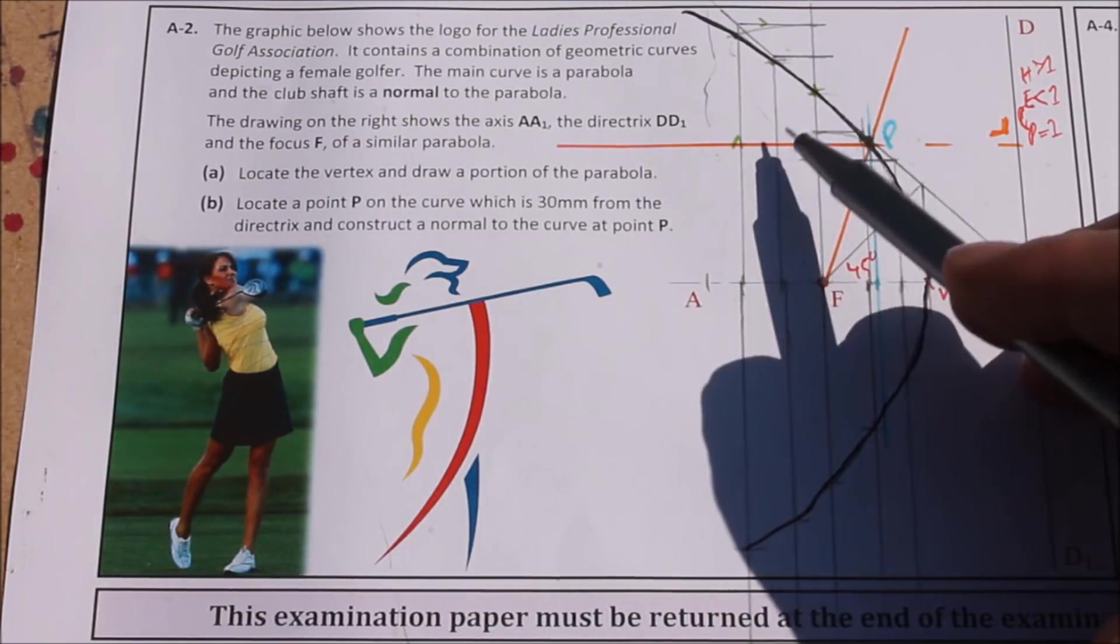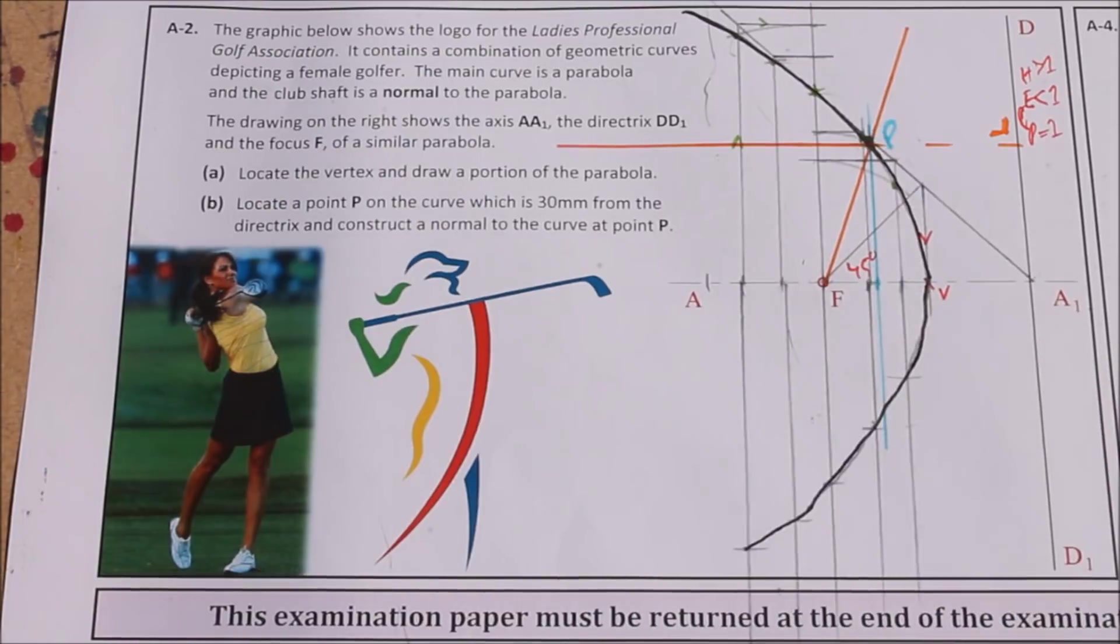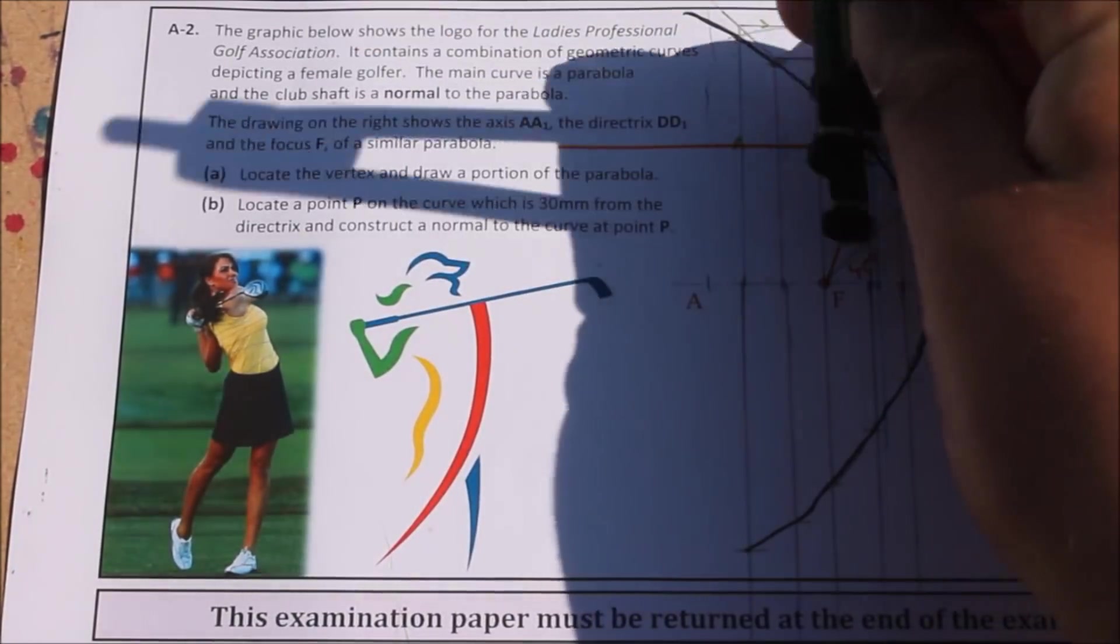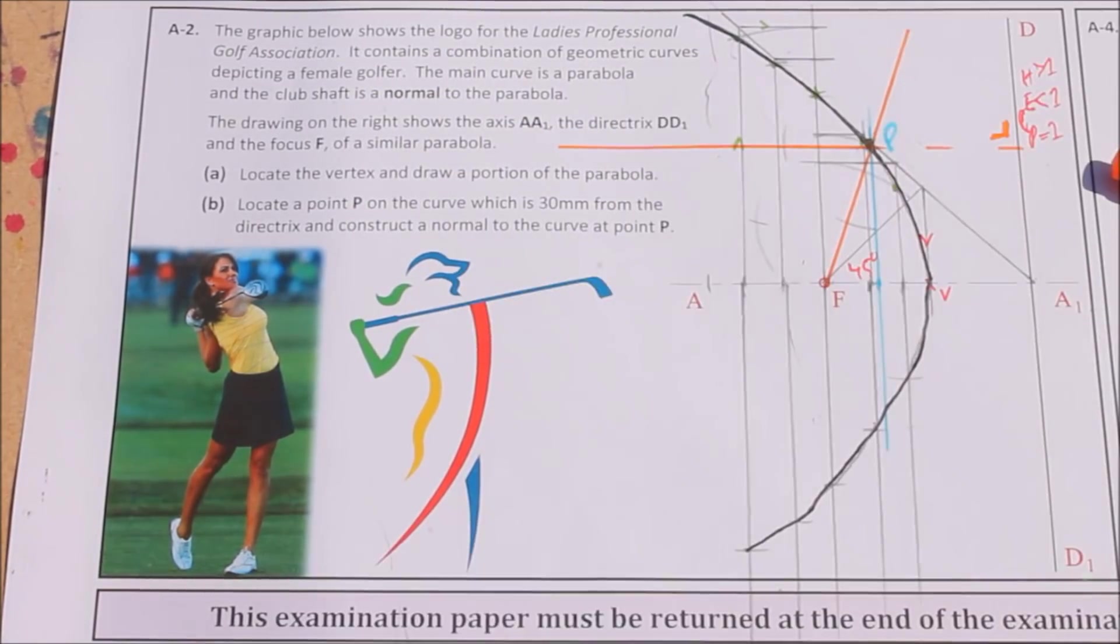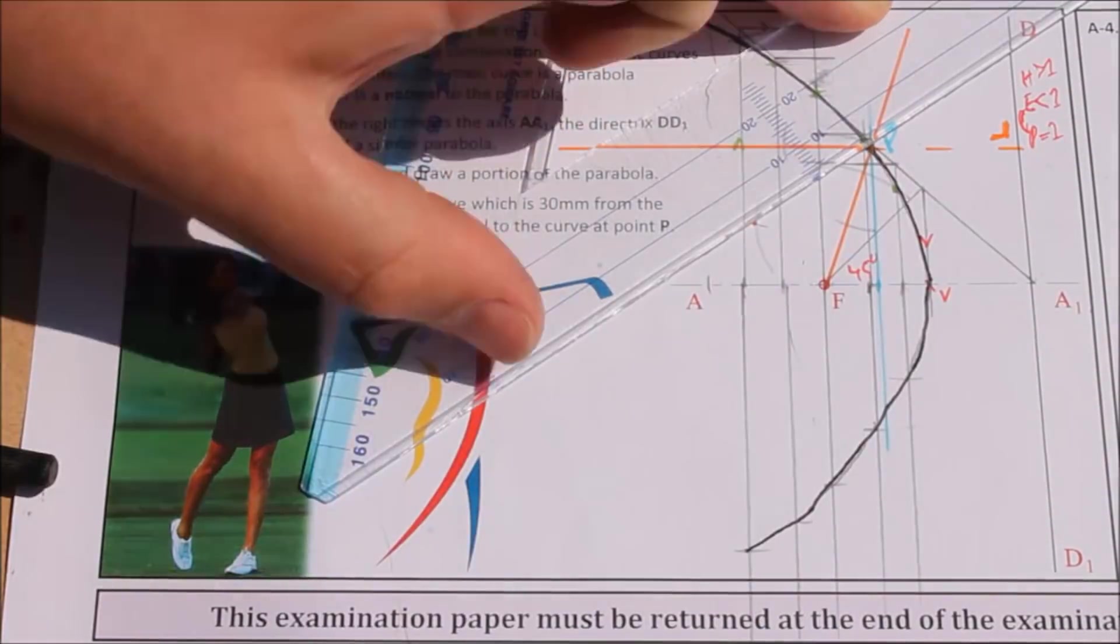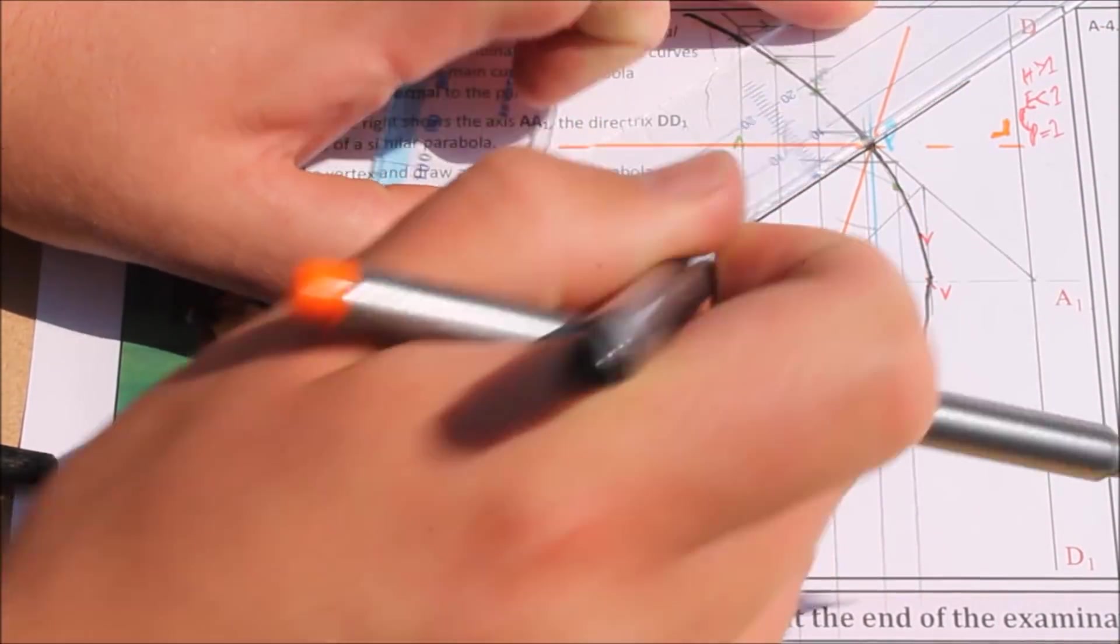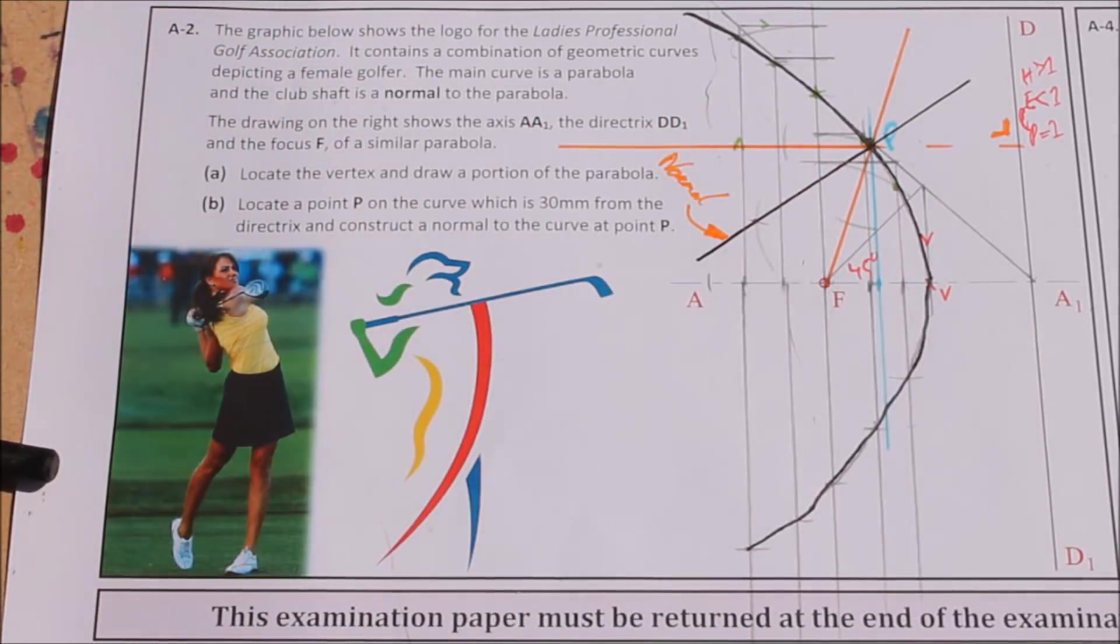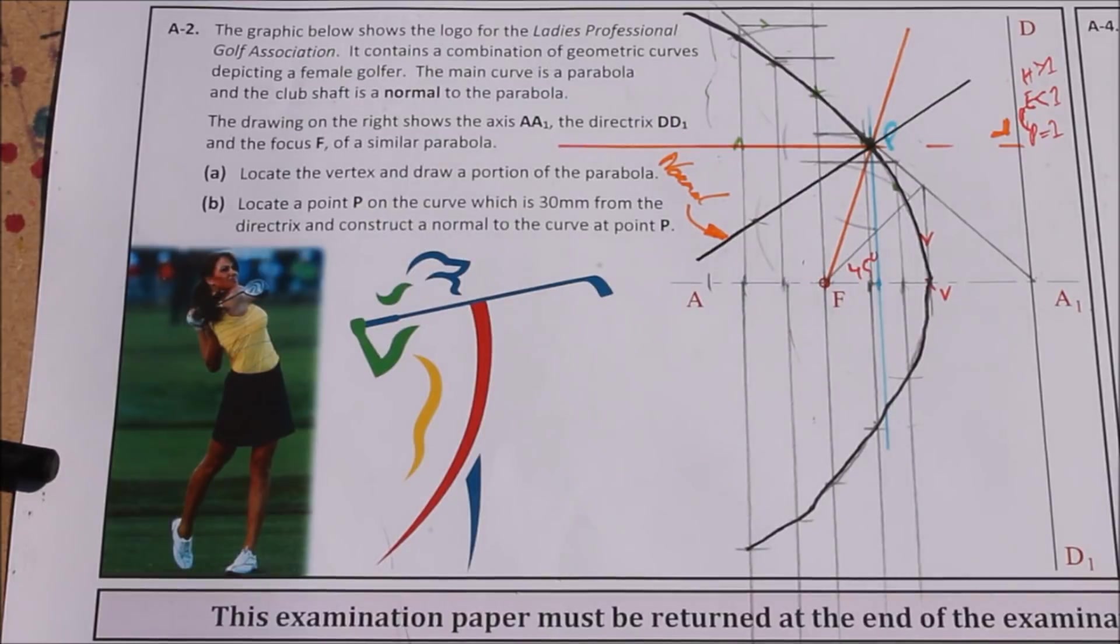So this angle here, bisect that angle and draw in your normal. By bisecting the line and bisecting the angle, you get the normal to the curve and that is part B done. So you get point P 30mm from the directrix and we construct a normal to the curve at point P.